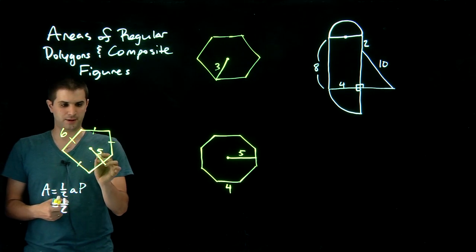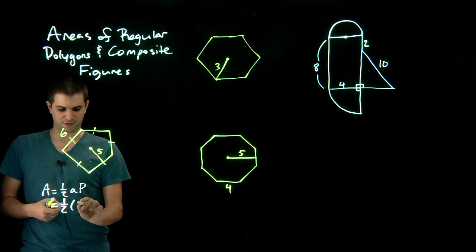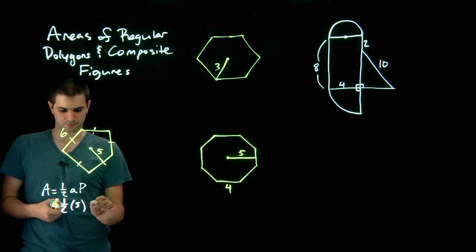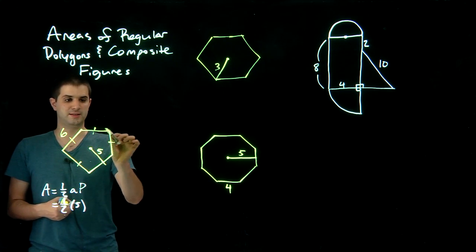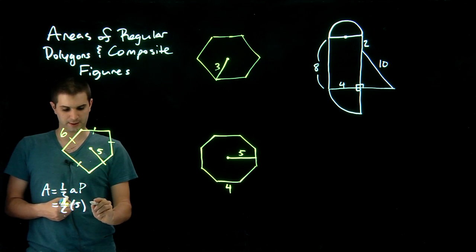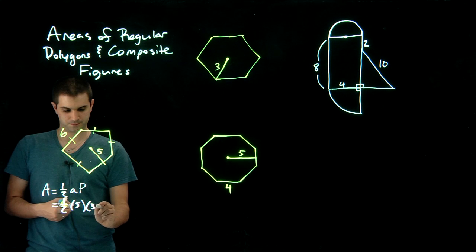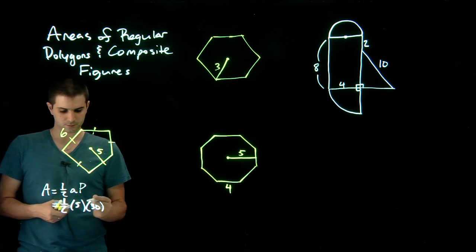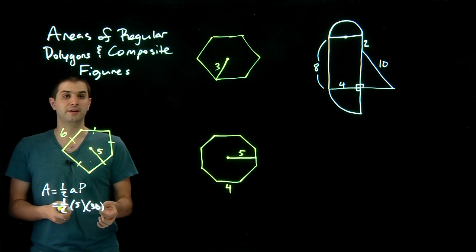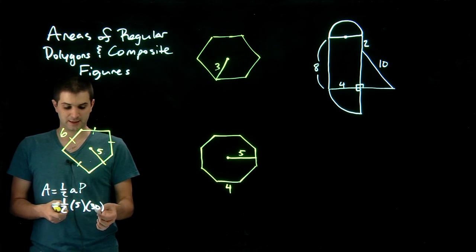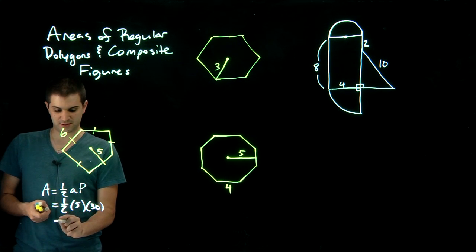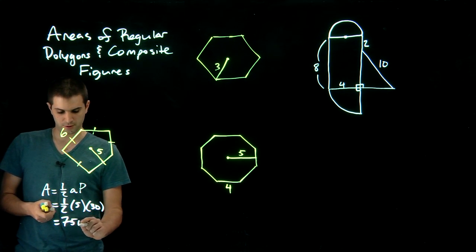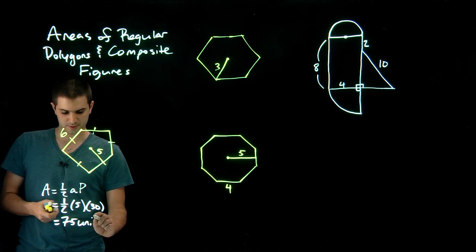The apothem here is five. The perimeter is going to be six times five, which is thirty. Half of thirty is fifteen, and fifteen times five is seventy-five units squared.